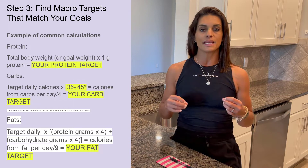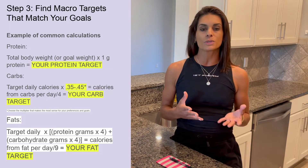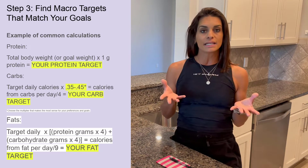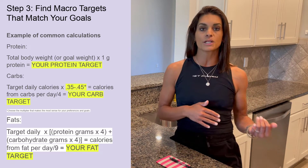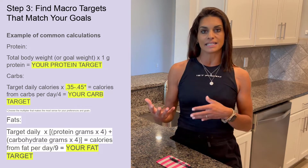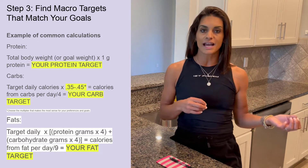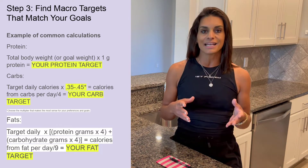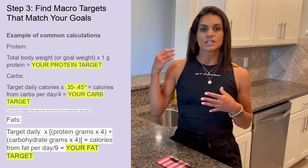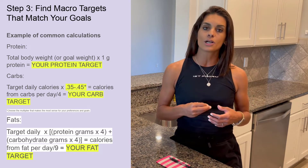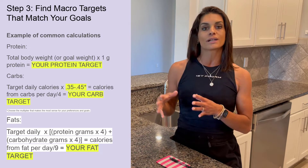Now that you've calculated your TDEE, we are ready to determine your specific macro targets. Your TDEE is going to be the amount of energy that your body needs coming in to maintain your current body weight. So if your goal was to maintain where you're currently at, you would want to eat around that number of calories per day. If your goal is to lose weight, you're going to need to eat below that number because we're going to want to be in a calorie deficit — eating less than what your body needs so your body will let go of fat. If you're in a phase where you want to gain weight, you'll need to consume calories higher than your TDEE. Determine what your goal is right now, and then we can get your specific macro targets based on that goal.